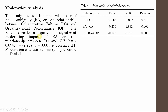The results revealed a negative and significant moderating impact of RA on the relationship between CC and OP. The interaction is negative, meaning RA is negatively moderating the relationship between CC and OP. Your p-value is 0.006, which means significant, so your H1 is significant.